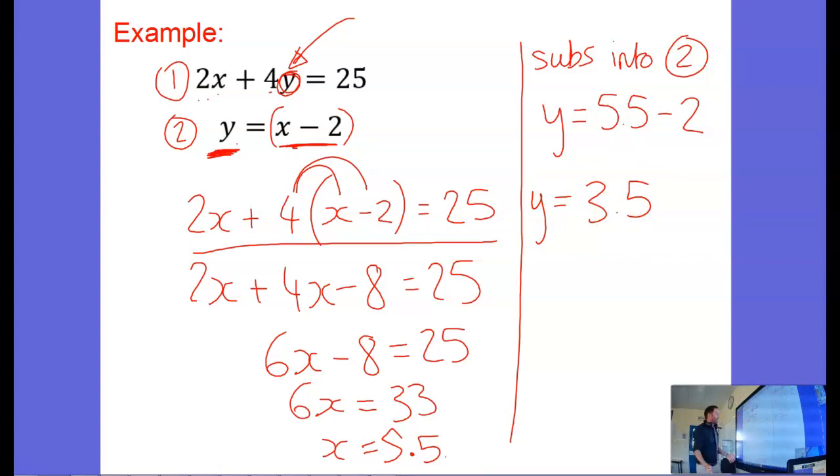And you can check that through, just make sure it works. 2 times x, well x is 5.5, 2 times 5.5 is 11. 4 times y, 4 times 3.5 is 14. Is 11 plus 14, 25? Yes it is. Is y, 3.5, 5.5 minus 2? Yes it is. We know we're correct.